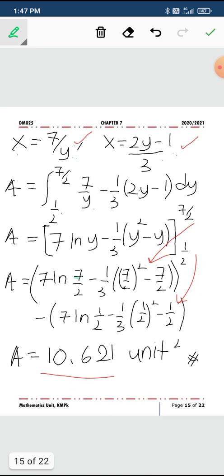So, this is your top, your roof, minus this. You integrate. I integrate, 2y becomes y squared minus y. 7y becomes 7 ln y. Then you substitute 7 over 2 and half inside. Show the substitution. After showing the substitution, simplify using your calculator. You get the area 10.621 unit squared.